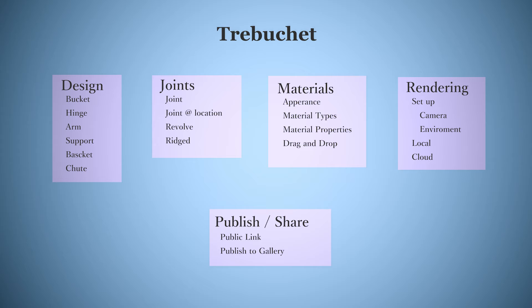We're going to use normal joints and then joints at location. Then we're going to do some material stuff — how to get to the appearance window, how to change your material types and selecting them, how to manipulate the properties of them, as well as how to drag and drop them onto your model, and also how to interchange them once they're on your model.